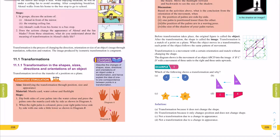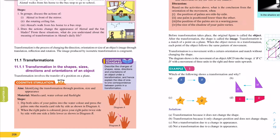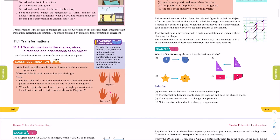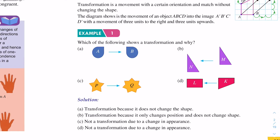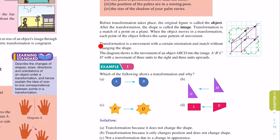Let's look at the first learning standard: describe the changes of shape, size, direction, and orientation of an object under a transformation, and hence explain the idea of one-to-one correspondence between points in a transformation. Now let's look at the first example — which of the following shows a transformation, and why? Before that, it is stated that transformation is a movement with a certain orientation and match without changing the shape.